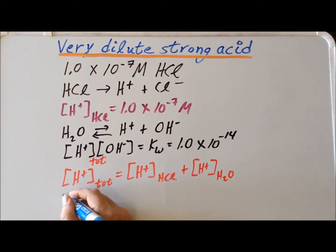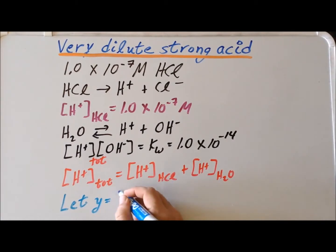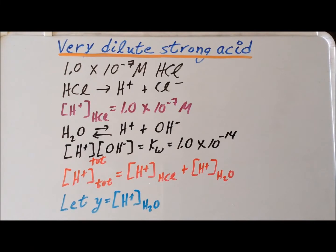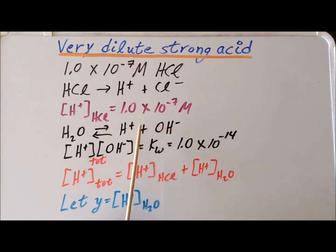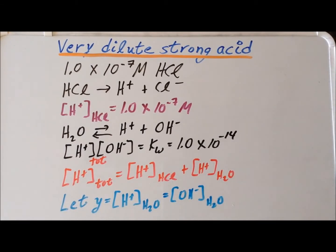Next, we assign a variable Y, setting it equal to the hydrogen ion that comes just from the dissociation of water. We do this because there is a one-to-one relationship between the hydrogen ion from water and the hydroxide from water. So Y is also equal to the concentration of hydroxide, with subscript H₂O, reminding us of that relationship.